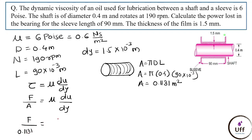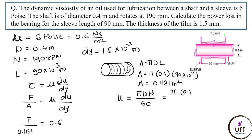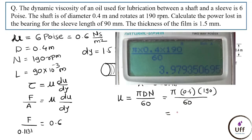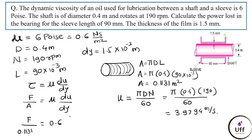Dynamic viscosity is 0.6. The change in velocity (linear velocity) is calculated as u = πdN/60 = π × 0.4 × 190 / 60 = 3.9794 m/s. Note: don't confuse u (velocity) with μ (dynamic viscosity).